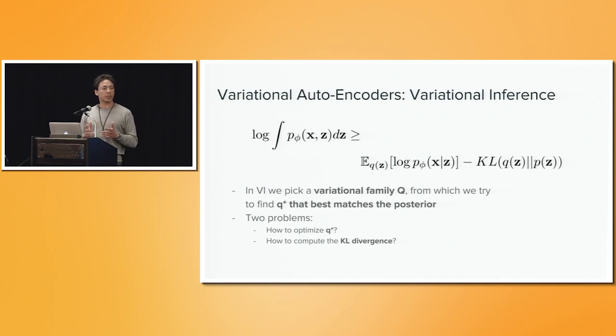The two problems that we then have to solve is how do we actually go about finding this Q star, and two, how do we compute the KL divergence that just popped up.